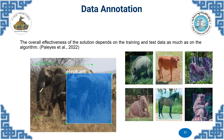To elaborate further on data annotation: it involves drawing a bounding box around the object of interest, as shown in this picture. It is noted that the overall effectiveness of the solution depends on the quality of the training and test dataset.